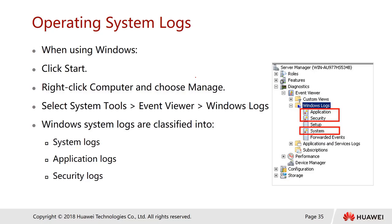We can also collect operating system logs — for example, Windows logs. To collect Windows logs, click Start, right-click Computer, choose Manage, then select System Tools, Event Viewer, and Windows Logs. Windows logs are classified into system logs, application logs, and security logs. System logs contain most system activity; application logs cover installed applications; security logs cover user authentication — who logged in, logged off, failed passwords, and so on.